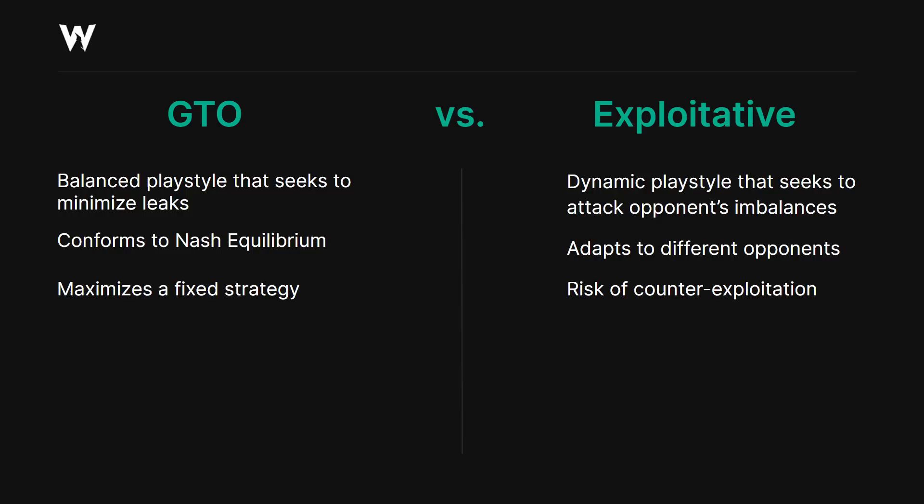GTO is designed to be unexploitable, meaning that the best possible strategy against GTO is GTO. Exploitative, on the other hand, can potentially gain more versus an imbalanced opponent. However, for every risk you take, you also carry a risk of being counter-exploited. The further you stray from equilibrium, the bigger the risk and also the bigger the reward.